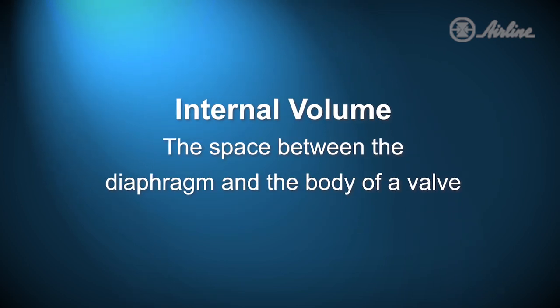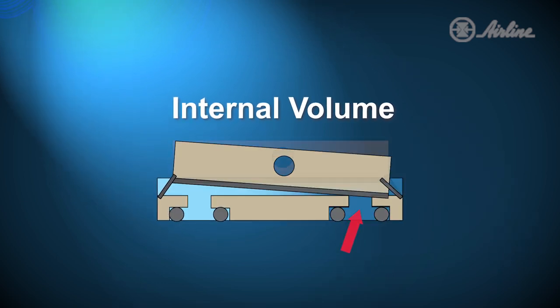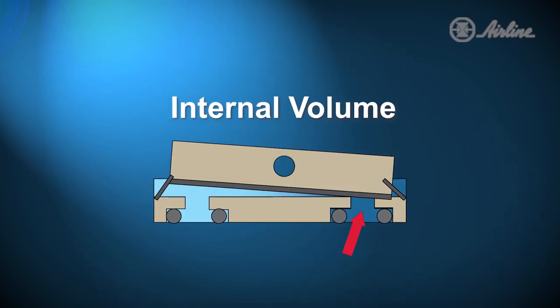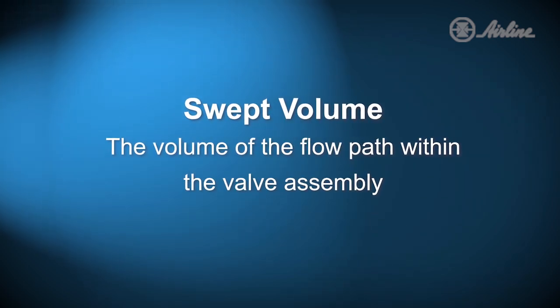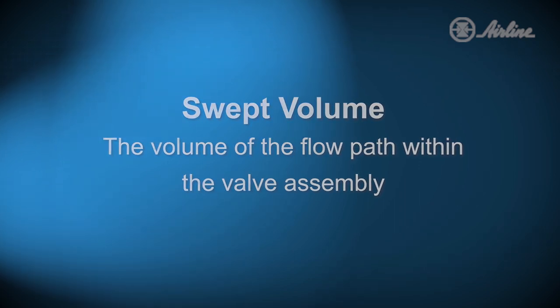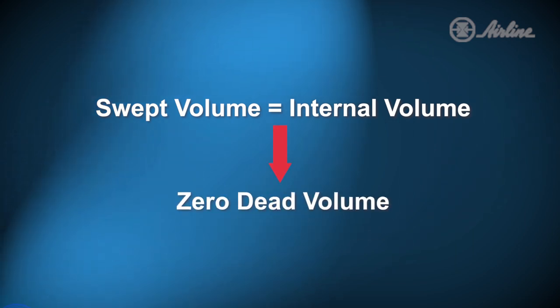The second term is internal volume — the space between the diaphragm and the body of the valve. When a valve closes, this volume becomes trapped. The third term is swept volume, which is the volume of the flow path within the valve assembly. To get a streamlined flow path, the swept volume would equal the internal volume, which in result would equal zero dead volume.